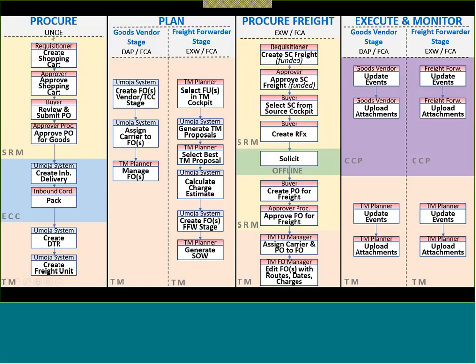We're starting here to the left — the procurement phase for UN-owned equipment — and basically the steps we would follow in SRM from creating a shopping cart to getting it approved, reviewing and submitting the PO, and approving the PO for goods. I've already raised the shopping cart, so we can skip raising it step-by-step, but I do want to go through some key fields in the shopping cart that are important for understanding TM later on, and how information goes from one system to another. We'll also see how ECC is linked to SRM, how the Umoja system automatically creates the inbound delivery, and how the DTR and freight units are generated.